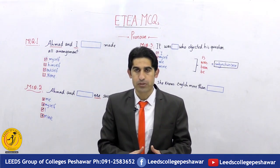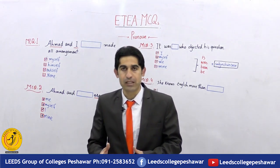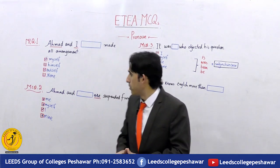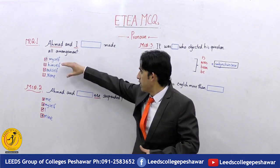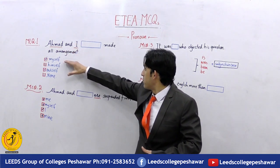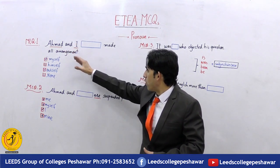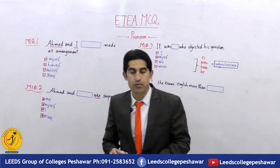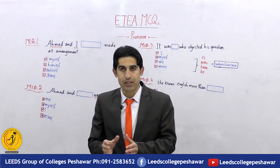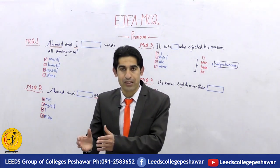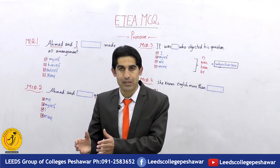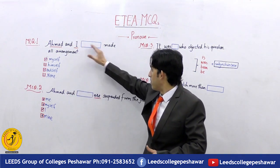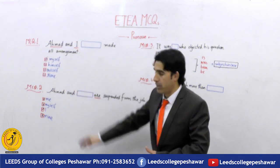Right here we have 'Ahmad and I myself made all arrangement.' The reflexive form 'myself' agrees with 'I'. So the correct answer is: Ahmad and I myself made all arrangement.